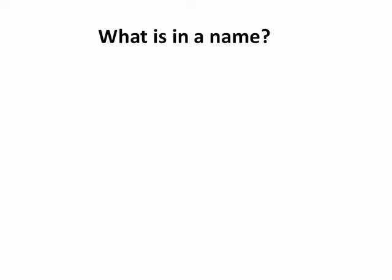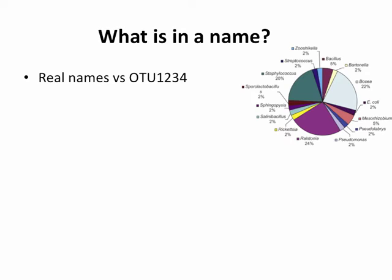So what's in a name? You can do clustering of sequences into OTUs at 97%, and then the second part is assigning taxonomic names to those things. Why would we want to do that? Why not just call them 1, 2, 3, 4, or OTU1234? Why would we want to give it a real name?